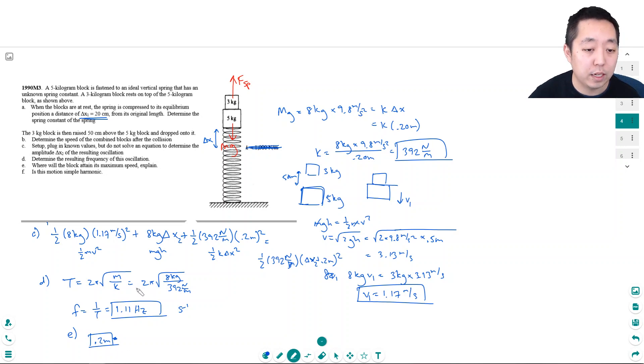However, this equation for part C, I kind of messed up on. This is not supposed to be 0.2; this is supposed to be whatever the position is with just the five kilogram block on it, like before the three kilogram block hits. So you have to find that delta x by k delta x is equal to 5 kilograms times g. mg is equal to k delta x; the spring force is equal to the gravitational force. So this delta x would be 5 kilograms times 9.8 meters per second squared divided by k, which is 392 newtons per meter. So 5 times 9.8 divided by 392, and this is 0.125 meters or 12.5 centimeters. So instead, this should be 0.125 meters, and this should also be 0.125 meters.